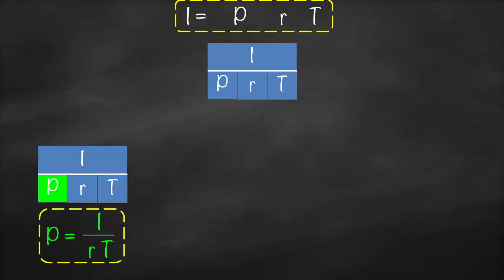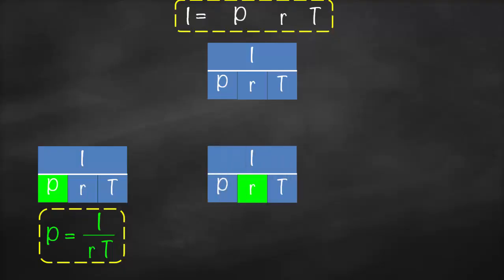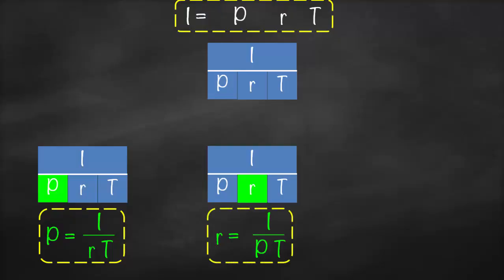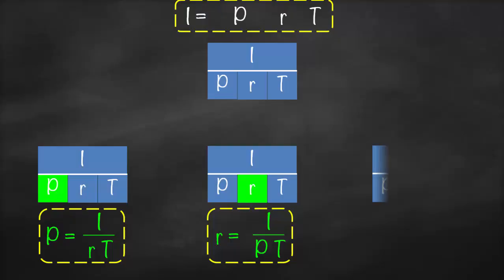What if we'd like to calculate our simple interest rate? Our simple interest rate is equivalent to interest amount divided by principal multiplied by time — that is our third formula. And if we'd like to calculate time, our time is equivalent to interest amount divided by principal multiplied by simple interest rate — that is our fourth formula.